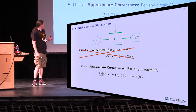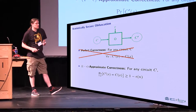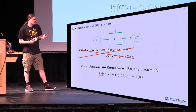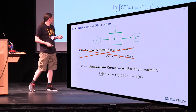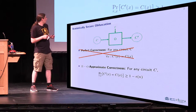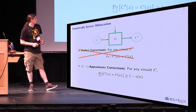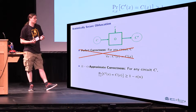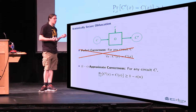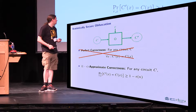However, we can sometimes get away with much weaker definitions. What we are going with is approximate correctness. Approximate correctness basically means that for a random input, the output circuit must agree with the input circuit with probability at least one minus epsilon, for some function epsilon that basically describes the approximation error of the obfuscator.